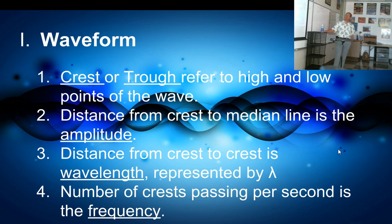We use the same terminology we used before. Crest or trough are high and low points of the wave. The amplitude is the distance from either the crest or the trough to the median line. Wavelength is distance from crest to crest, or you can go from trough to trough. We use the Greek capital letter lambda to represent wavelength. The number of crests passing per second is the frequency.